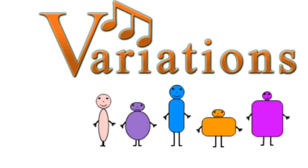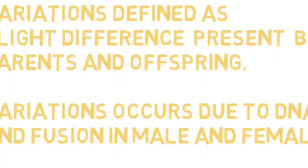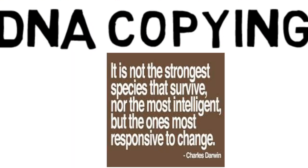Coming to variations. What are variations? Variations are slight differences present between parents and offspring. Definitely some differences will be present — parents and offspring don't look alike. These variations occur due to DNA copying and also because of the fusion of male and female gametes. DNA copying is the most important feature which helps in creating variations.